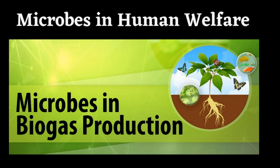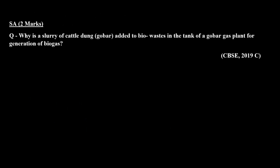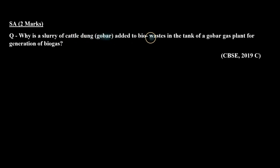Hello everyone. We are discussing previous year questions of the chapter 'Microbes in Human Welfare', and the topic is microbes in biogas production. In today's session we are going to discuss a short answer type question of two marks, which was asked in the CBSE board 2019. The question is: why is the slurry of cattle dung (gobar) added to bio-wastes in the tank of a gobar gas plant for generation of biogas?